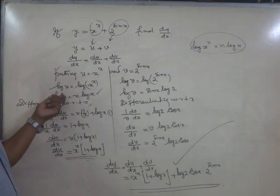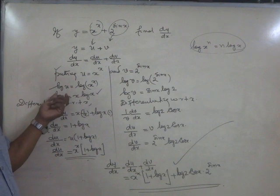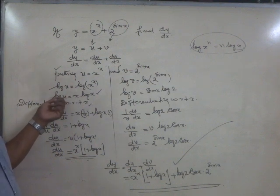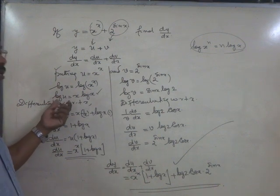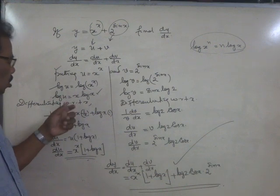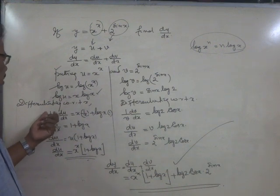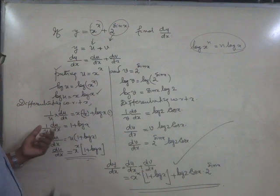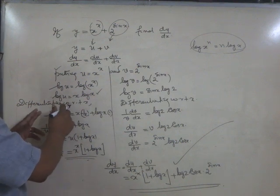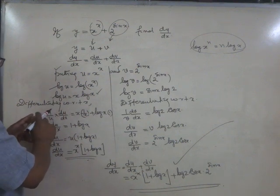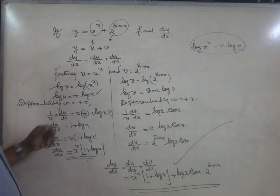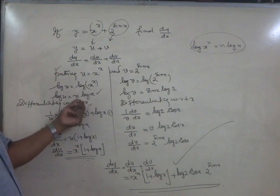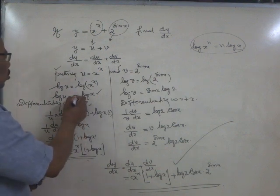If you differentiate log u with respect to u, the answer will be 1 by u. But we want to differentiate with respect to x, so 1 by u must be multiplied by du by dx. So on the left hand side on differentiation, you will get 1 by u into du by dx. What about the right side? It is a product of two functions.